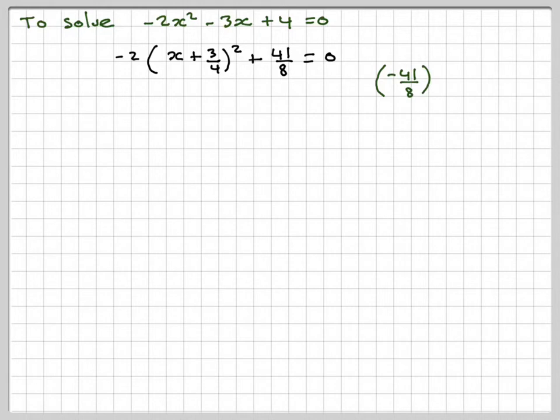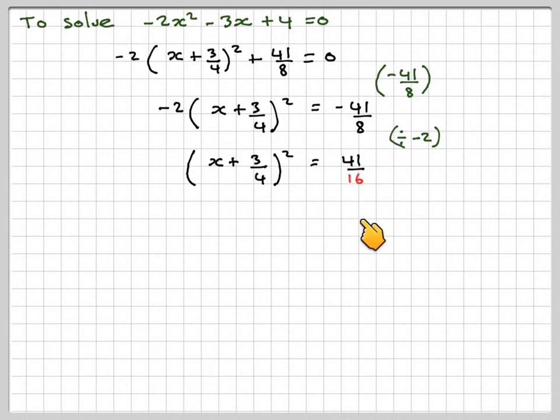Take minus 41 over 8 from both sides. So we get minus 2 brackets x plus 3 over 4 squared on this side. And then on this side we only get minus 41 over 8. Next thing to do is to divide by the minus 2. And dividing by minus 2 will make this become x plus 3 over 4 squared. A minus divided by a minus is positive. And this will become 41 over 16. So 41 over 8 divided by 2 is the same as 41 over 8 times a half.